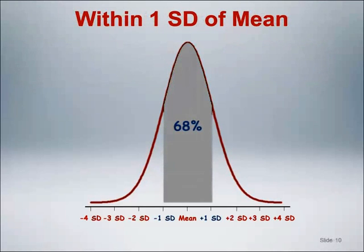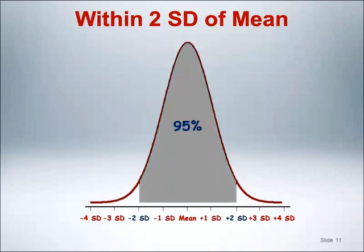About two-thirds, or 68%, of the values in a Gaussian distribution are within one standard deviation of the mean. About 95% of the values in a Gaussian distribution are within two standard deviations of the mean.